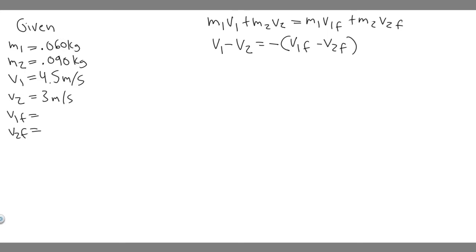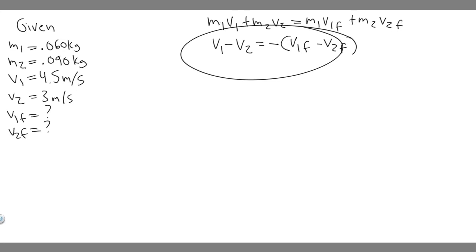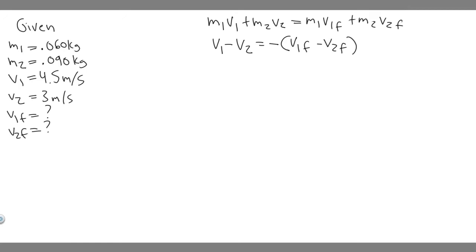Assuming a perfectly elastic collision, we need to determine the speed and direction of each ball after the collision — that is, we're solving for V1 final and V2 final. We'll use the top equation, but since we have two unknowns, we'll manipulate the second equation to solve for V2 final in terms of V1 final, and then substitute it into the first equation to solve for V1 final.